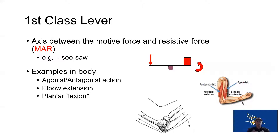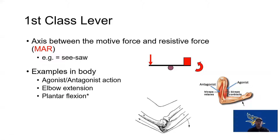A first class lever is like a seesaw — the motive force on one side, resistive force on the other, and the axis in the middle, causing torque in opposite directions. We see this in the body with elbow extension: the triceps pull on one side, the resistive force of the forearm is on the opposite side, and the elbow joint is in the center. The olecranon process is slightly on one side of the joint center while the arm is on the opposite side.